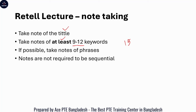Ami raha jara higher score target kore chhi — amra jeta korte pari, sheta hochhe note taake phrase-e pore notto korte pari. First of all, amra phrase hisebe note nite pari, but if we are not good at it, amra keyword gulo-ke phrase-e pore notto korte pari. We will see some example. Note gulo je sequential hote haabe, ami raha kuno kotha ne.